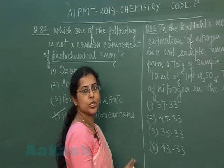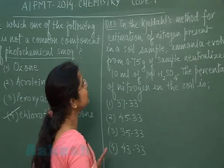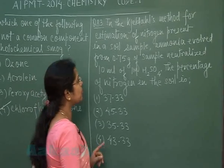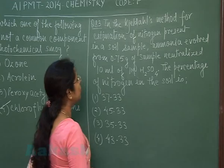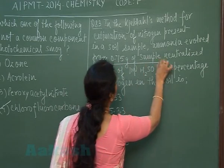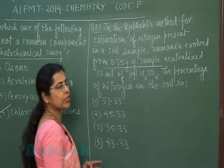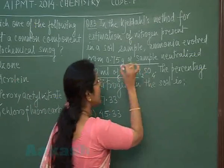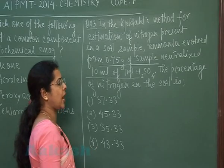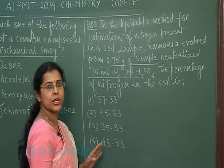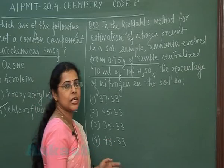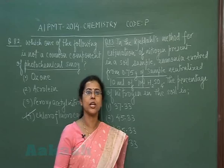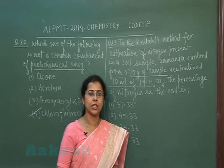Our next question is question number 83. In the Kjeldahl method for estimation of nitrogen present in a soil sample, ammonia evolved from 0.75 gram of sample neutralized 10 milliliter of 1 molar sulfuric acid. What is the percentage of nitrogen in the soil? The Kjeldahl method is used to estimate the percentage of nitrogen in soil or in other compounds.